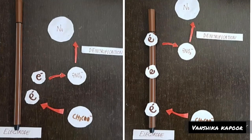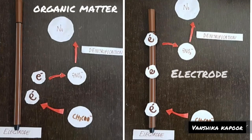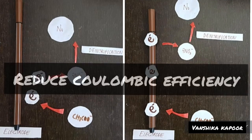These electrons can be directly acquired by the bacteria from the organic matter or from the electrode. This denitrification reduces the coulombic efficiency.